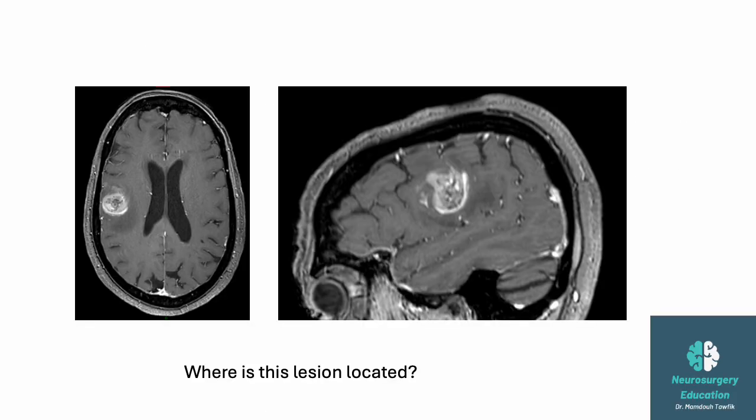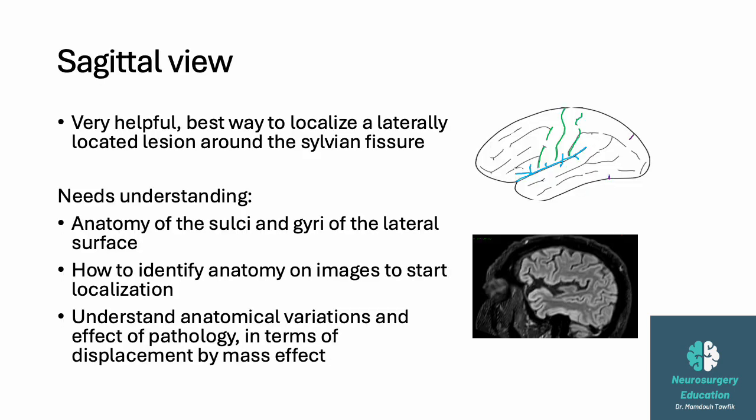Please pause for a minute and try to identify the location of this lesion. Sagittal views are best to localize a lesion located laterally near the sylvian fissure. You need to understand lateral surface anatomy, radiological identification, and the effects of pathology.